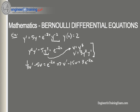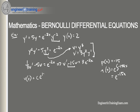Here p(x) equals negative 15, which means our integrating factor is e to the integral of negative 15 dx, or e to the negative 15x. Multiplying through and integrating — multiplying the integrating factor through the whole equation, simplifying the left side into product rule format, integrating, and rearranging — we get: v(x) equals c times e to the 15x minus (3/17) times e to the negative 2x.